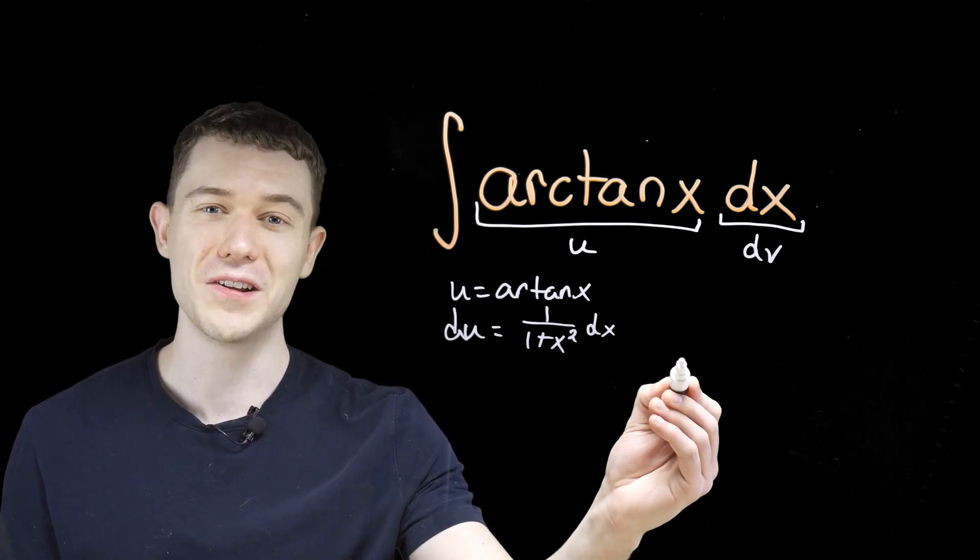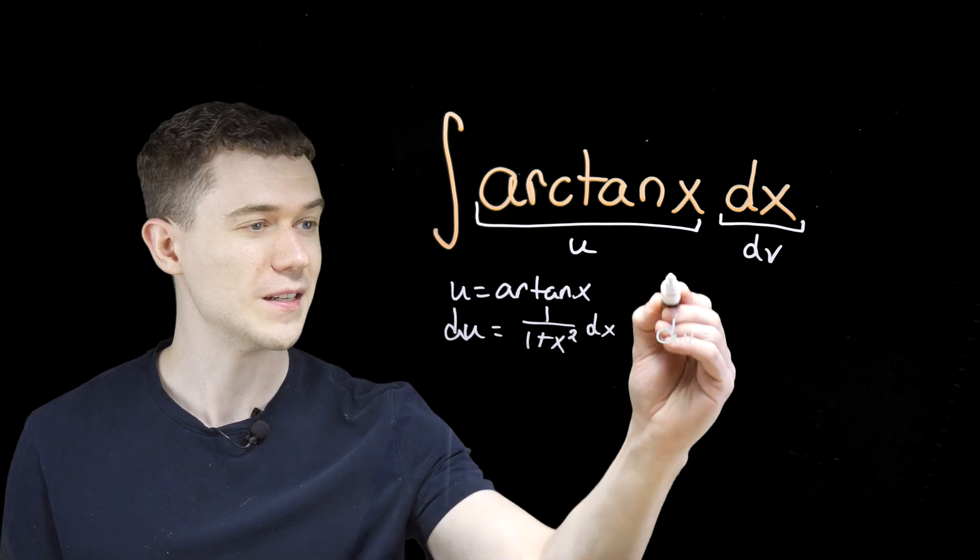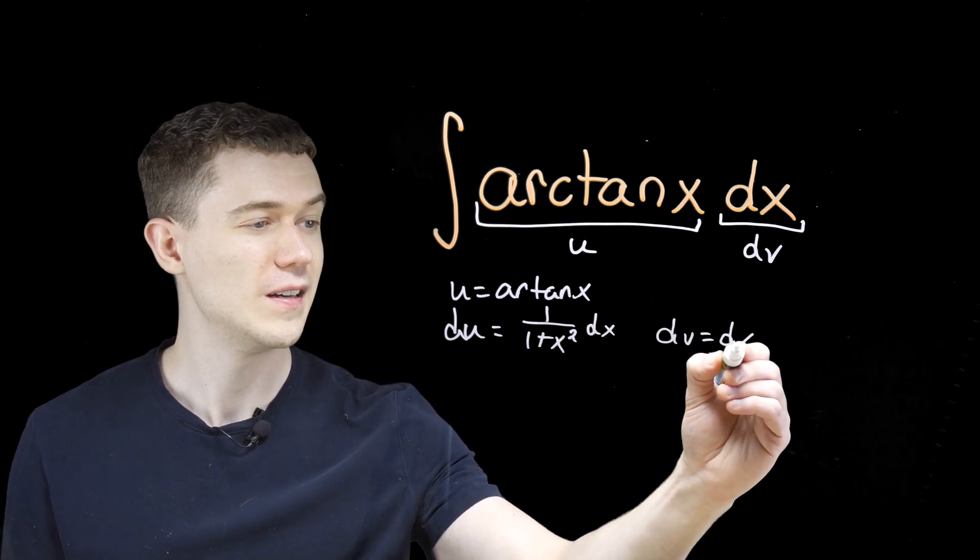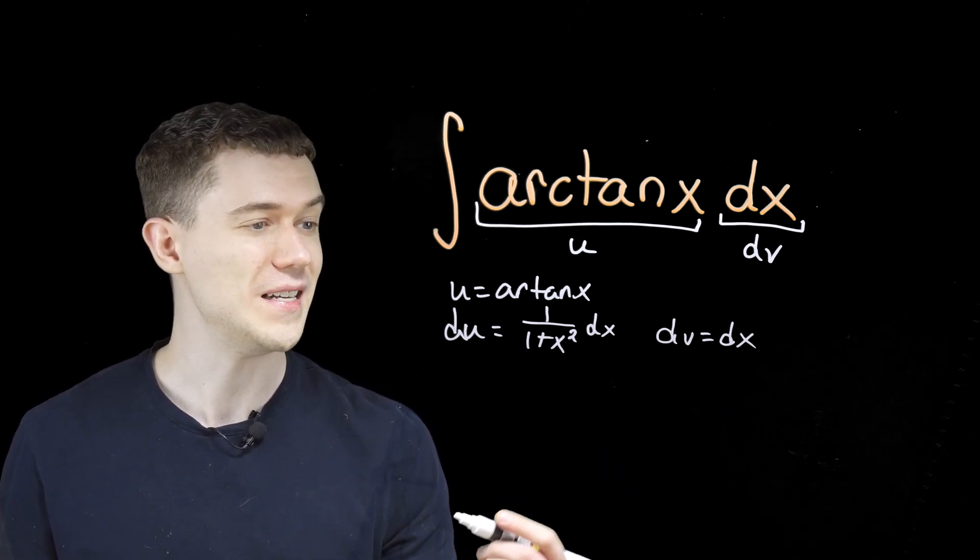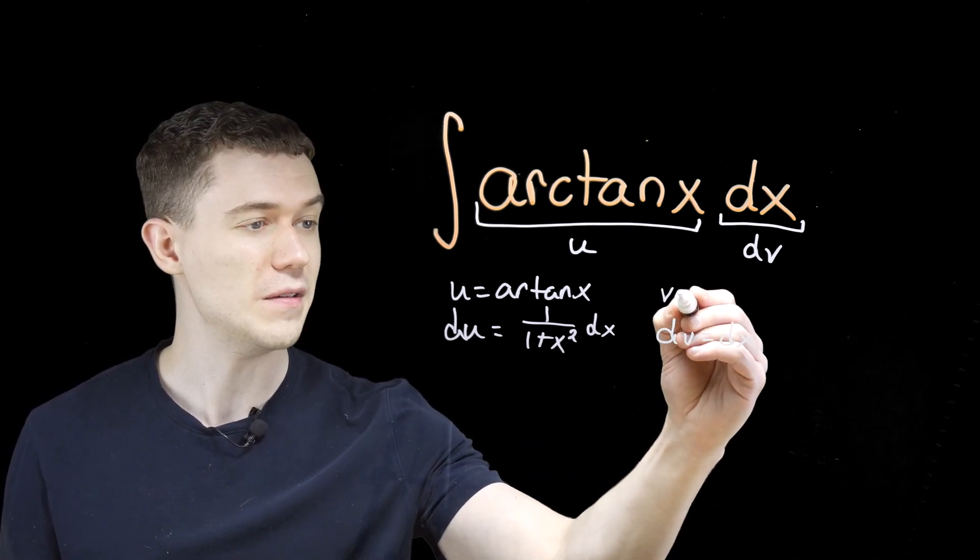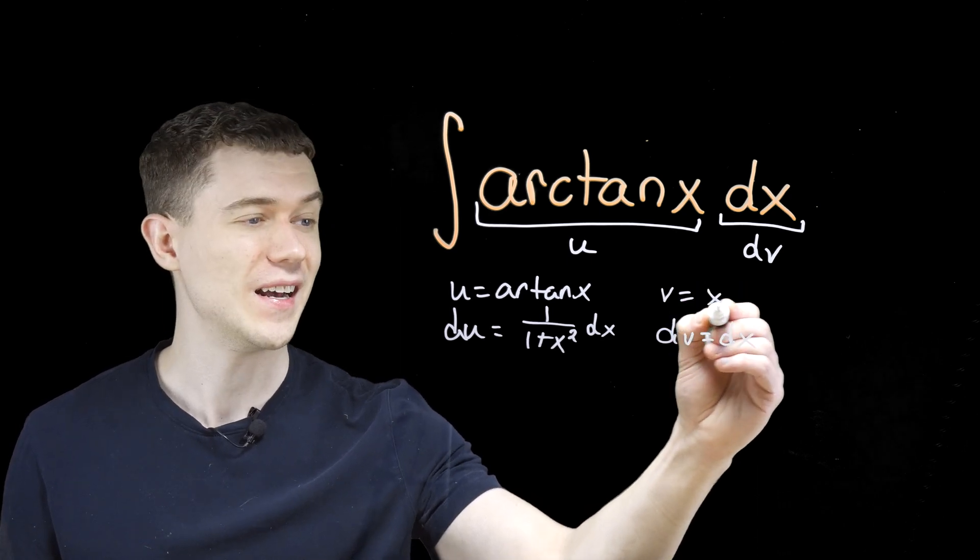And then, depends on where you like to write this. I typically like to write the dv down here, but some people like to write it up here. This time we go the other way. The antiderivative of dx, well, that would be v. The antiderivative of 1 dx is just x.